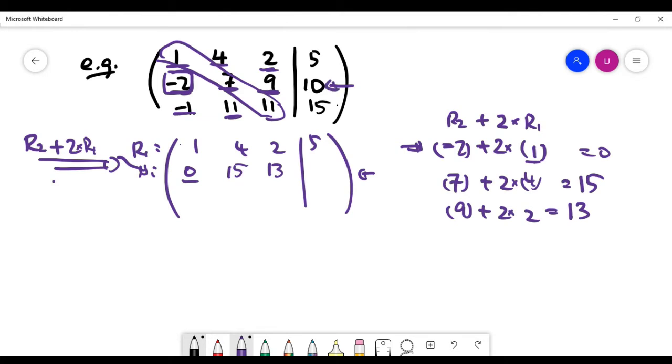And the last number is going to be row two which is 10 plus 2 times 5, so it's going to be 10 plus 10 which is 20. The row three we can actually do on the same step.